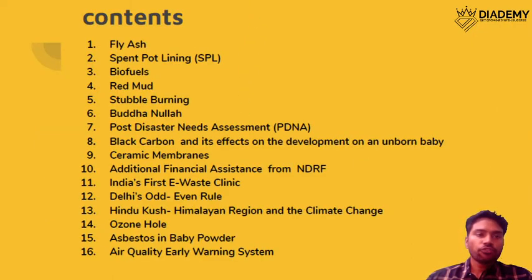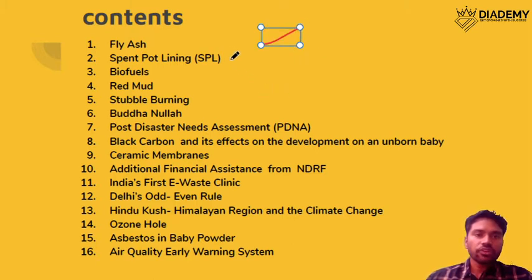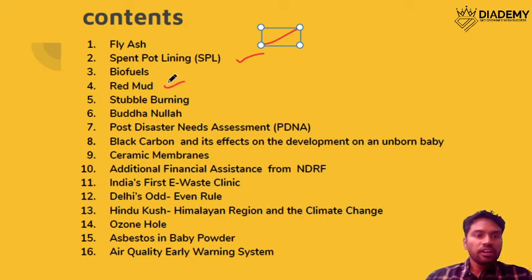Today we will be looking at the following topics: fly ash, spent pot lining from the aluminum industry, red mud which also comes from the aluminum process, biofuels, and the stubble burning issue and Buddha Nala.